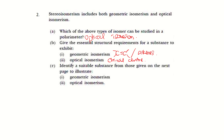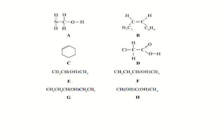Part C: identify a suitable substance from those given to illustrate geometrical isomers and optical isomers. To show geometrical isomers, you must first have a C=C double bond, so we ignore those without double bonds. A is out, D is out, and others without double bonds are out. We only consider B, C, and H.